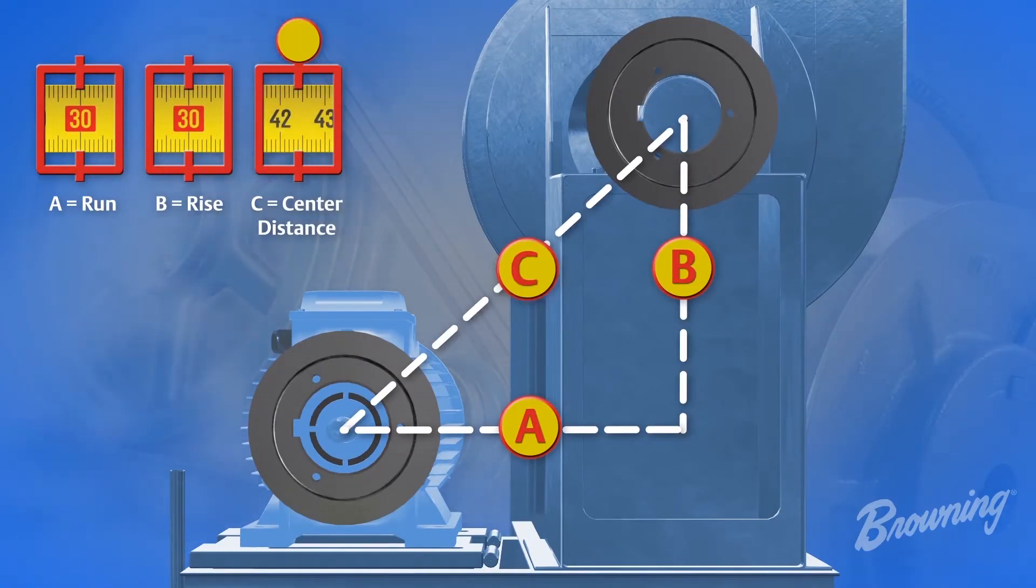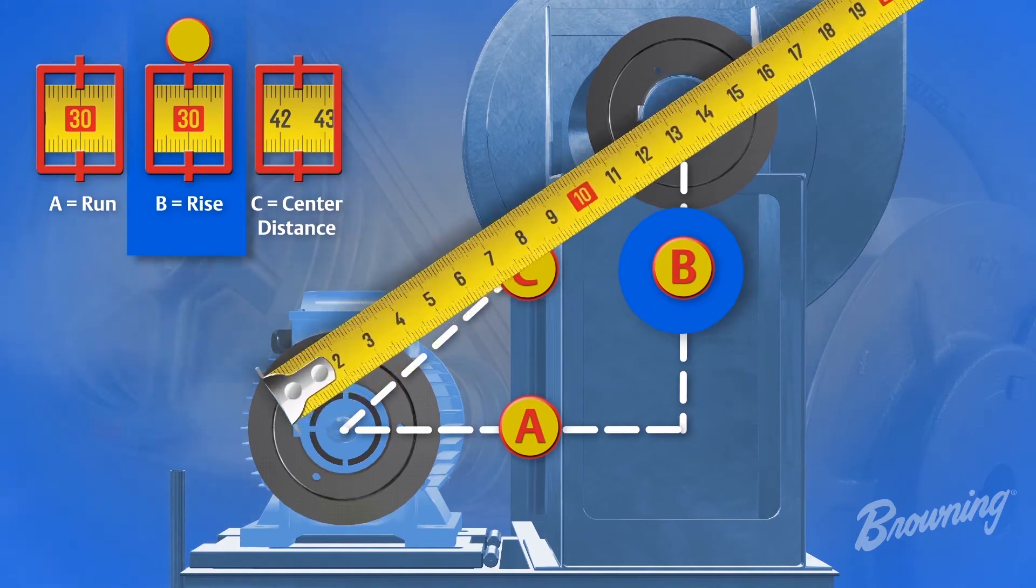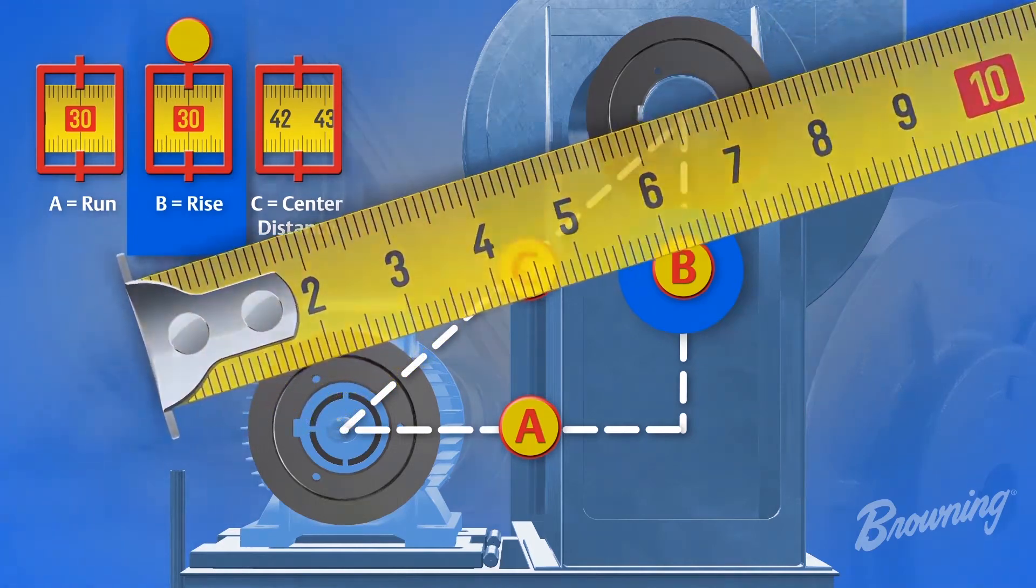and c equals center distance. So we measure current center distance at 42.42 inches, current run at 30 inches, and current rise at 30 inches. Each of these measurements can be taken with a simple tape measure.